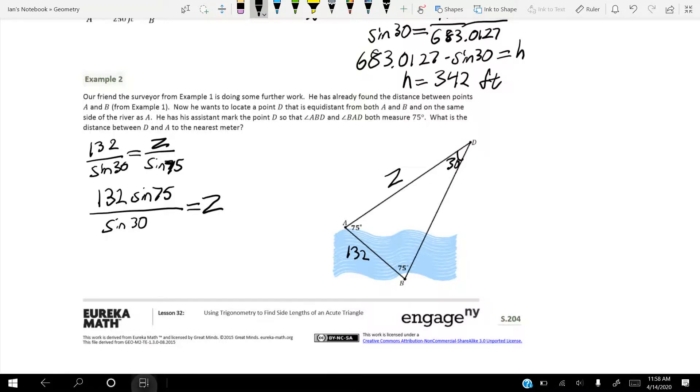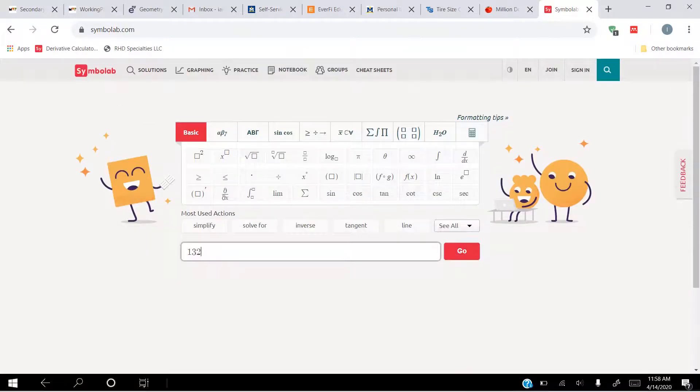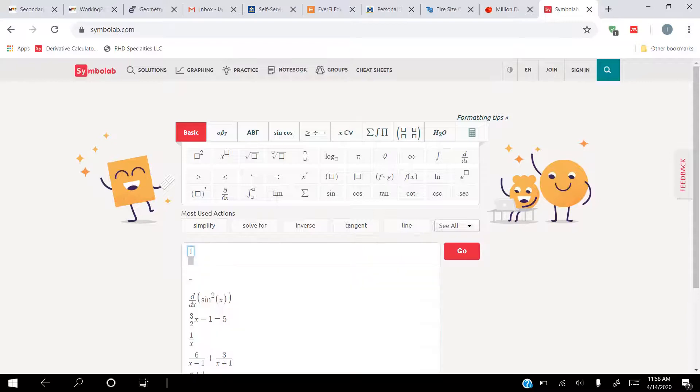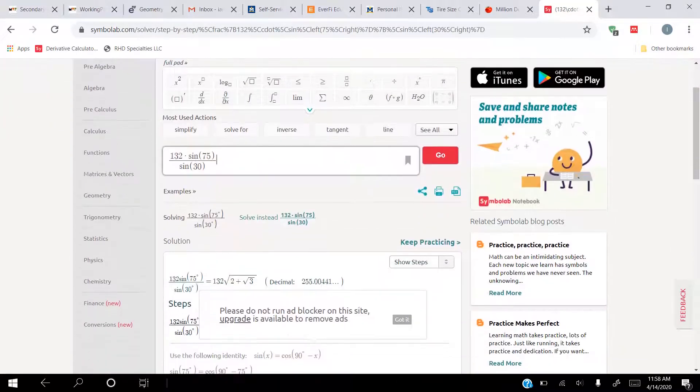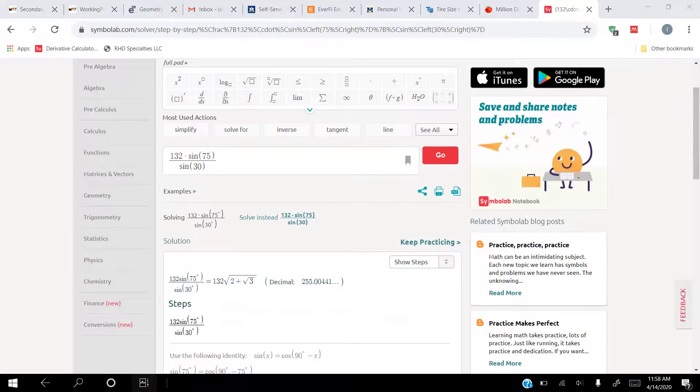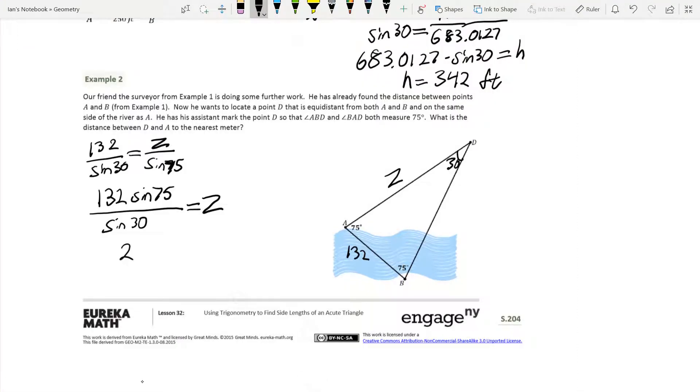Now, we don't know this off the top of our heads, and I don't even want to pretend like I know it off the top of my head. We're going to come back over here to Simple Lab and type in our problem. So 132, actually first to make our fraction, 132 times the sine of 75 divided by the sine of 30. Hit enter. And we get roughly 255 meters. So we come back over to the notebook, and we get that 255 meters is going to be equal to Z.